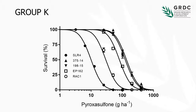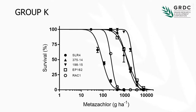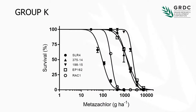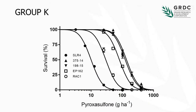For these three populations, at 100 grams of AI — the recommended field rate — this population has quite a low level of resistance, but we're getting populations where we need well over the recommended field rate to get 50% control. This selected RAC1 population is controlled at the label rate.